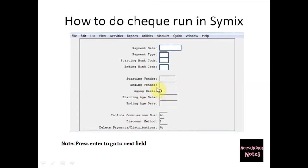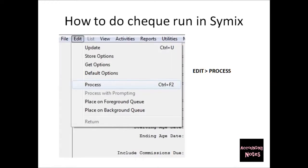Next it says Aging Basis — you should always choose D, which means Due. Next it says Starting Age Date — always leave this blank. For the Ending Age Date, choose two weeks from the check run date, so two weeks ahead of today would be the ending aging date. For Include Commissions Due, choose No. For Discount Method, it's always best to use A, which means All Discounts. For Delete Payments or Distributions, choose No and leave it as default.